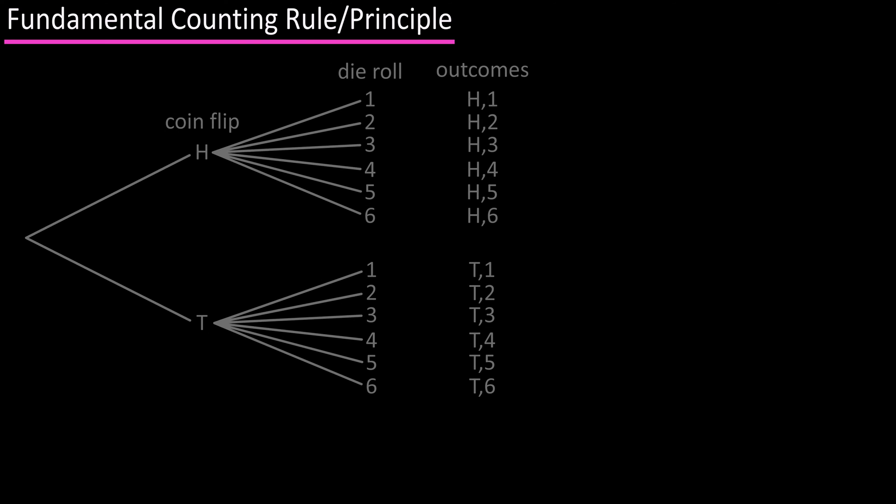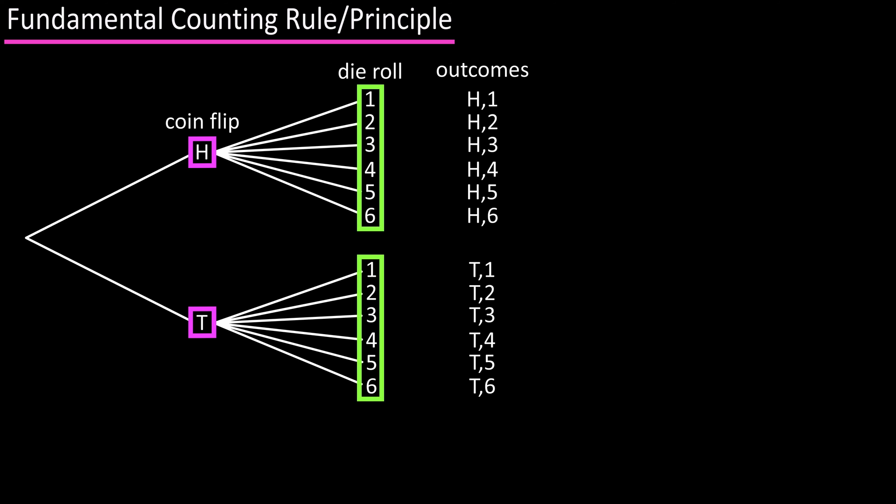To show this visually, here is a tree diagram for a coin flip and a die roll. You can have a head or a tail on the coin flip, and a one through six on the die roll. As you can see on the right, there are twelve possible outcomes.